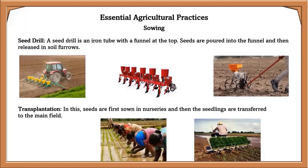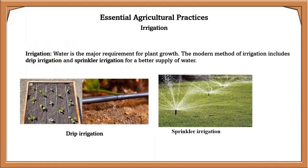Irrigation: water is the major requirement for plant growth. Water supply through various methods for the growing plant is called irrigation. Modern methods of irrigation include drip irrigation and sprinkler irrigation for better water supply.